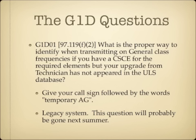The first question: what is the proper way to identify when transmitting on general class frequencies if you have a CSCE for the required elements, but your upgrade from technician has not appeared in the ULS database? The procedure is to give your call sign followed by the words 'temporary AG' or 'temporary alpha gulf.'